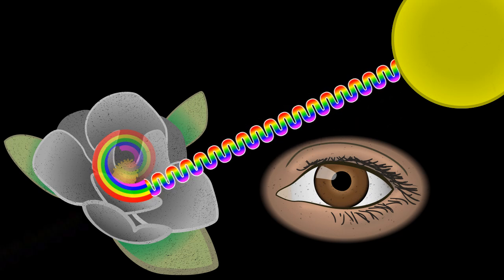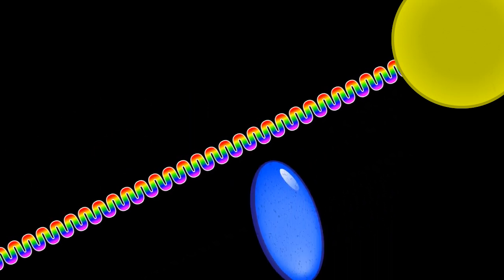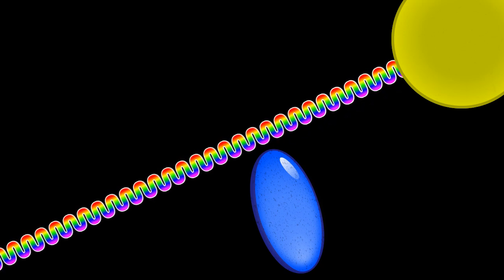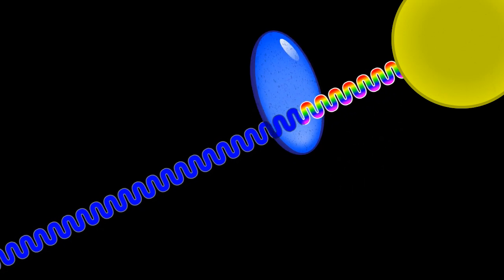Certain objects transmit light, too. This means that some wavelengths travel through an object, like blue light travels through this piece of glass.